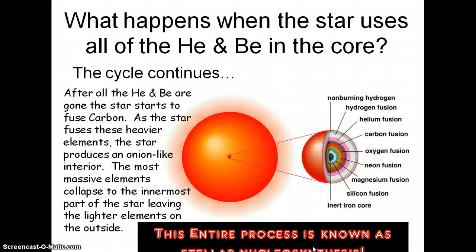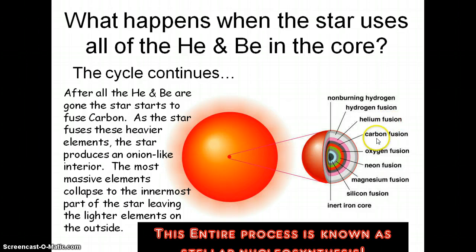As the star uses all of the helium and beryllium to make carbon, the cycle continues. The carbon that is made accumulates enough to collapse into the core, and now you have the unfused helium layer outside it — beryllium barely exists because of its short half-life. As you fuse more and more things, you get more and more layers: hydrogen, helium, carbon, oxygen, neon, magnesium, silicon, and finally iron. This entire process is known as stellar nucleosynthesis — the making of elements from the stars.